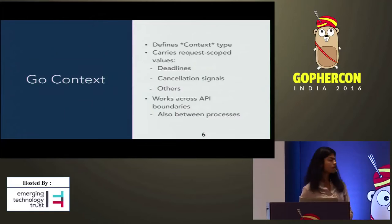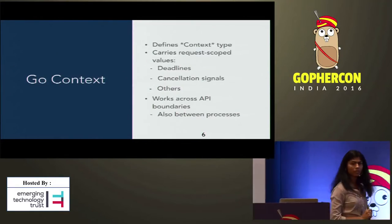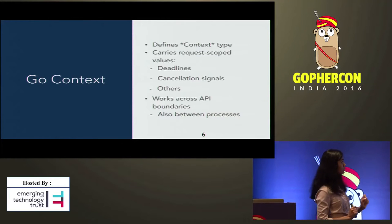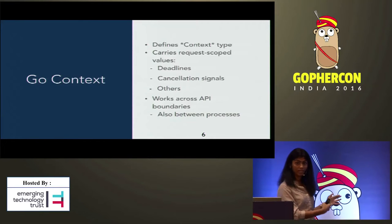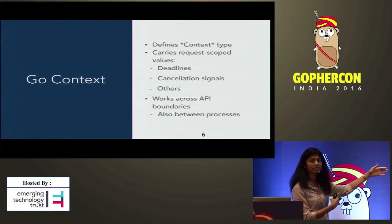This is what is meant by a context. A context, in plain terms, maps a flow end to end — all the way from A to the last upstream server and back. Go defines a context type that can carry this information across API boundaries and processes. The kinds of information we're looking for include deadlines, cancellation signals, and request-scoped values.